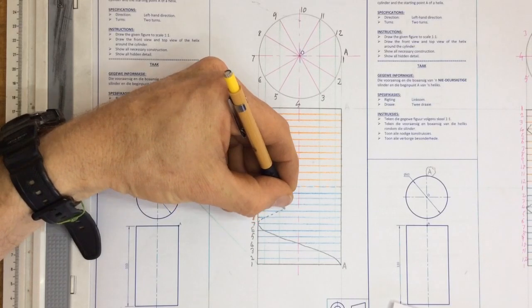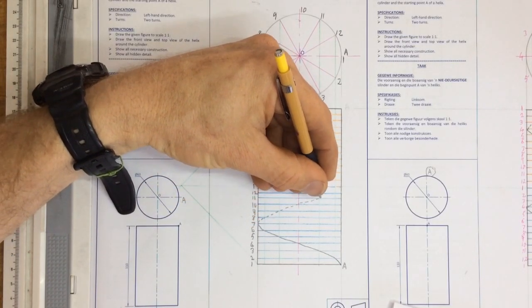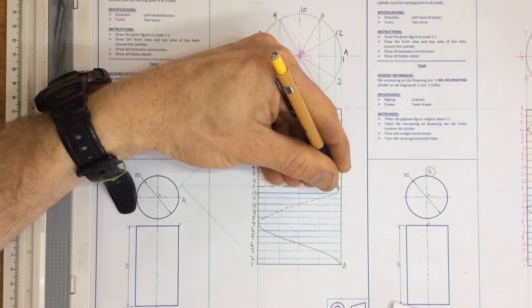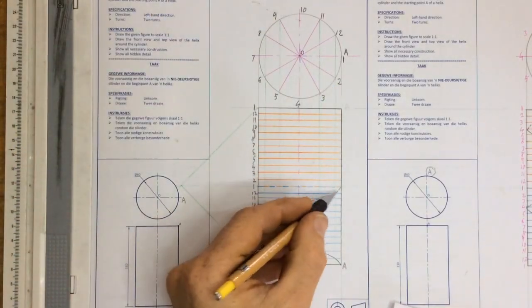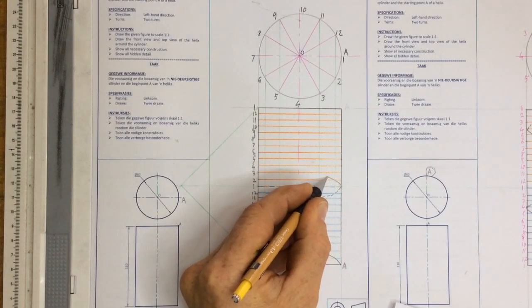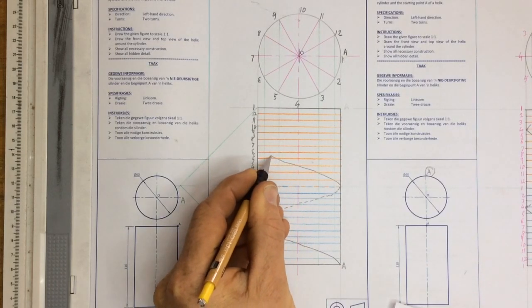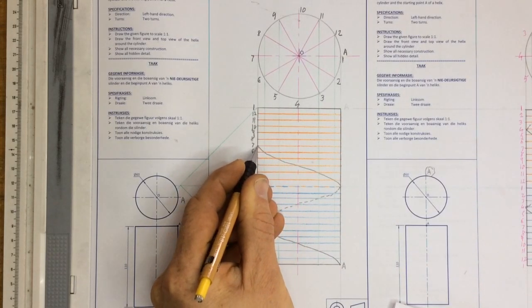So I've got hidden detail going along here all the way up to that point over there. That point over there, you'll see, is one again. And now I need to go dark. Why? Because I can see that at the front going up to seven over there,